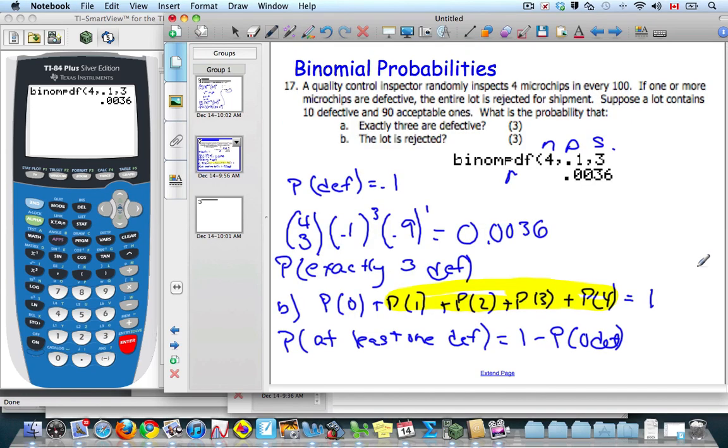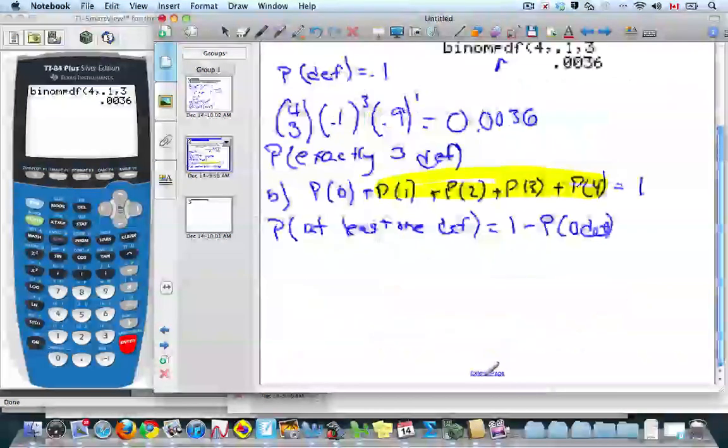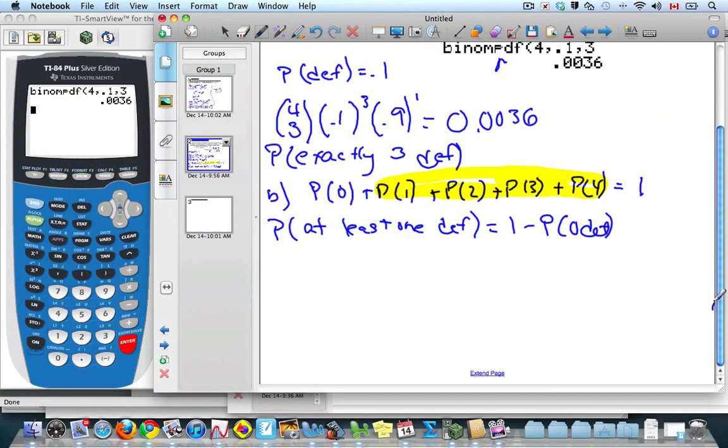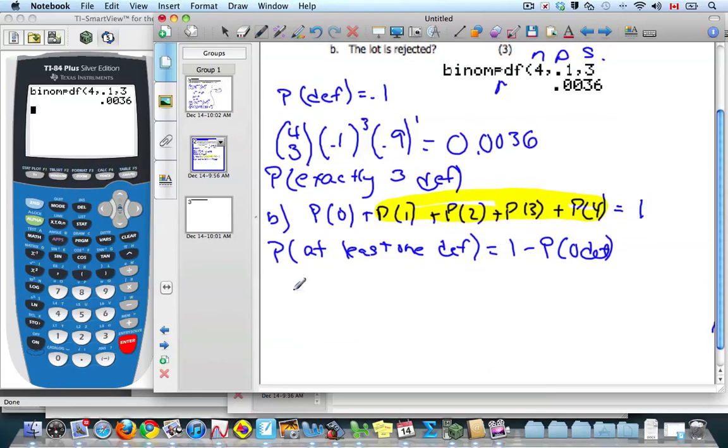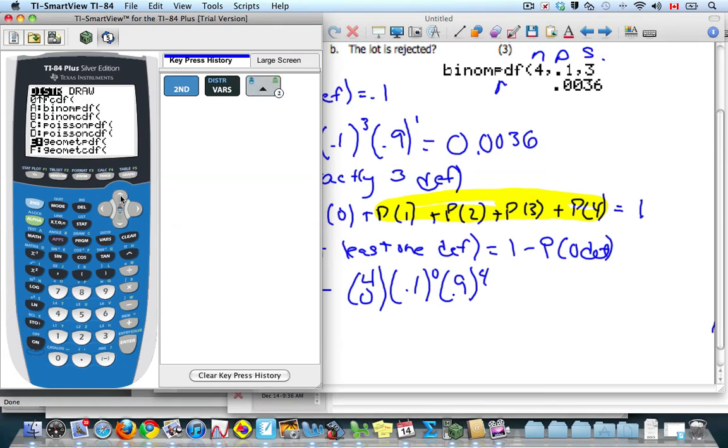And so if I use this scenario, I can go now to my calculator. This is going to be 1 minus 4 choose 0. The probability of being defective is 0.1 to the power of 0. The probability of being acceptable is 0.9, put that to the power of 4. And I can do this calculation using my calculator.